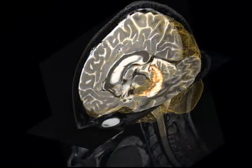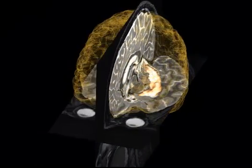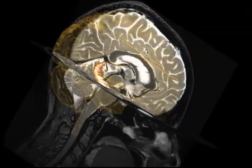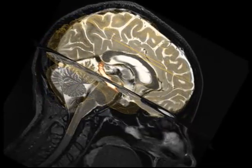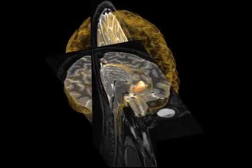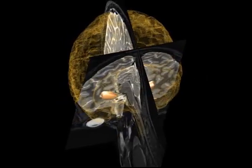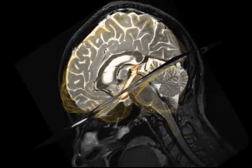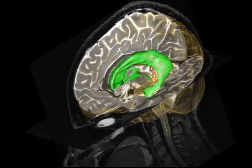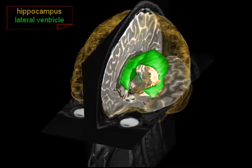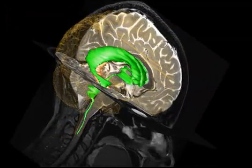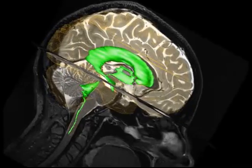For your convenience we continue the rotation with a horizontal plane. Now watch the association of the hippocampus with the inferior horn of the lateral ventricle, shown here in green. The hippocampus forms the bottom of the inferior horn of the lateral ventricle.